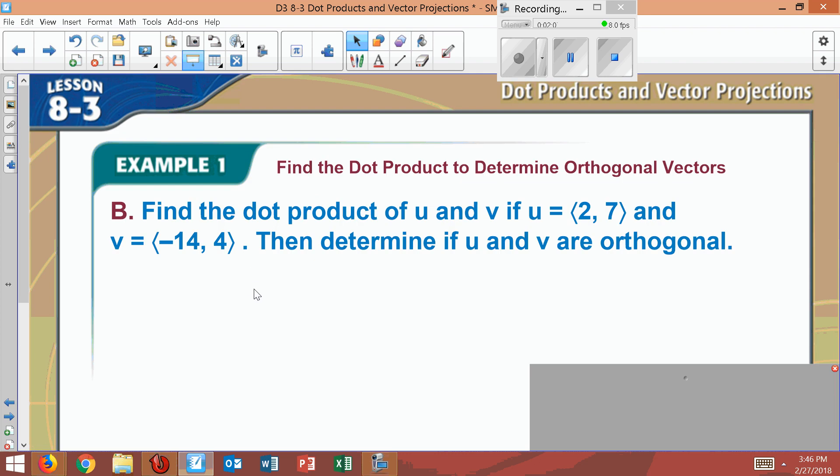Let's find the dot product of U and V given these examples. So this time, U dot V will equal X1, which is 2, times X2, which is negative 14. I put them in parentheses just so we don't get mixed up.